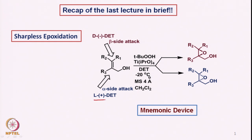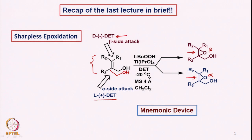The main reagent guiding the enantioselectivity is diethyl tartrate in optically active forms. If we take L(+)-DET and orient the allylic alcohol with the double bond vertically and the CH₂OH on the lower right, then L(+)-DET allows epoxidation from the alpha side. On the other hand, D(−)-diethyl tartrate gives epoxidation from the beta side, producing enantiomerically pure epoxides in a highly stereoselective fashion.